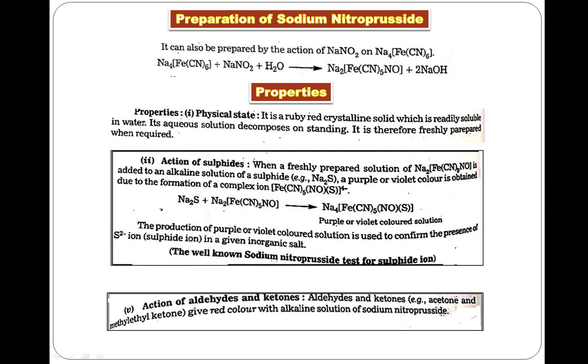Let's start with preparation. It can be prepared by the action of sodium nitrite (NaNO2) on sodium hexacyanoferrite (Na4[Fe(CN)6]). When you treat the sodium hexacyanoferrite complex in water with sodium nitrite, you will get sodium nitroprusside. The formula is Na2[Fe(CN)5NO]. In this coordination complex, one of the six CN ligands gets replaced by NO.